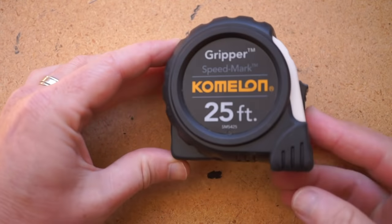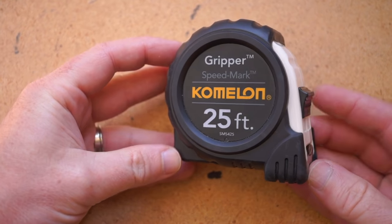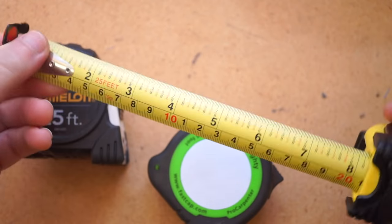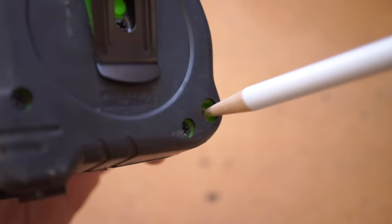At $9, the Kamalon Speedmark 25-foot gripper tape measure. I went looking for a measuring tape upgrade this year, and I have a whole separate video on that.